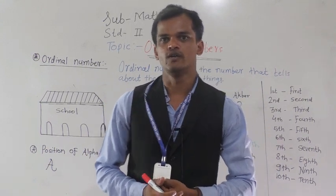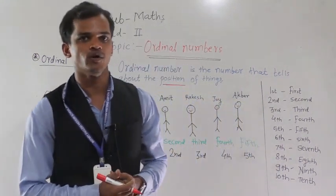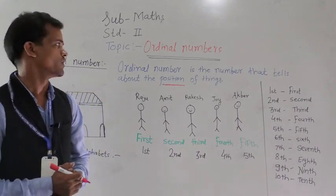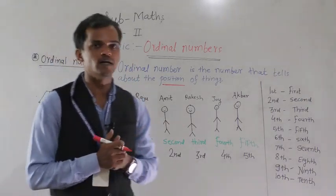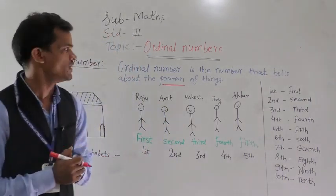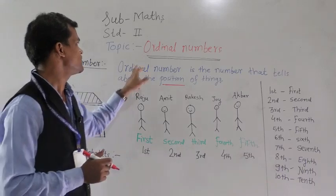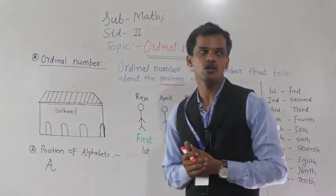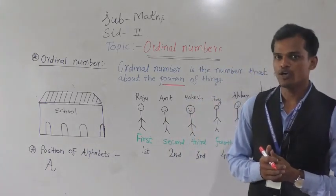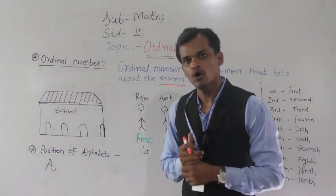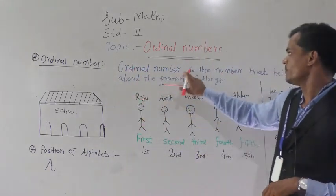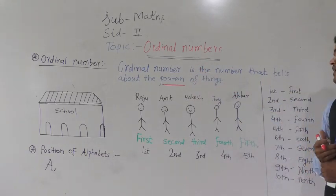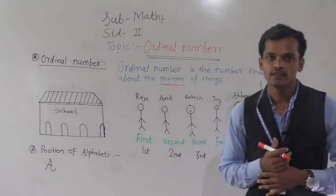Good morning dear students. Today we are going to start our new topic, that is ordinal numbers. So what is meant by ordinal numbers? Ordinal numbers means the numbers that tell about the position of things. This is the definition of ordinal number: ordinal number is the number that tells about the position of things.